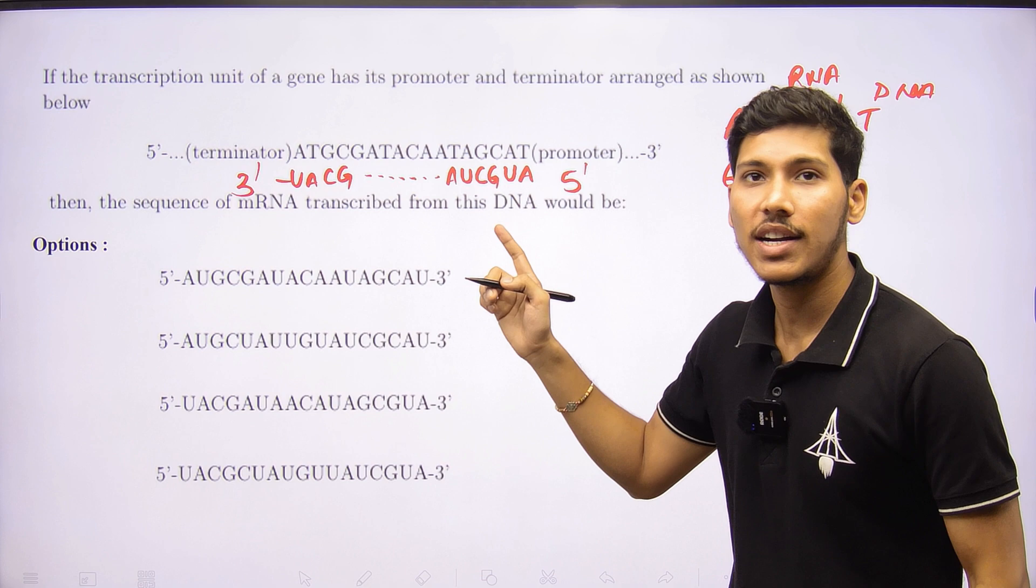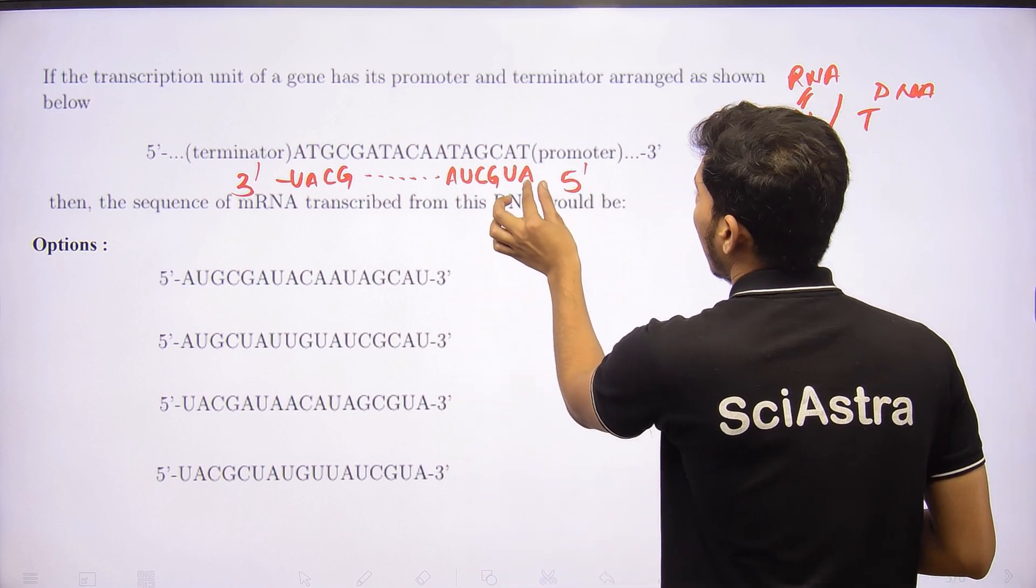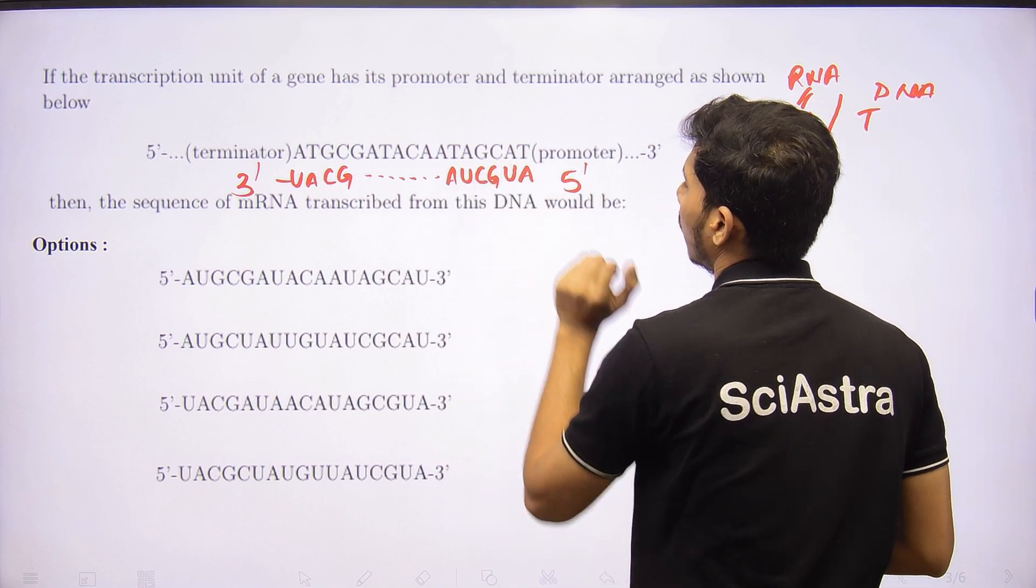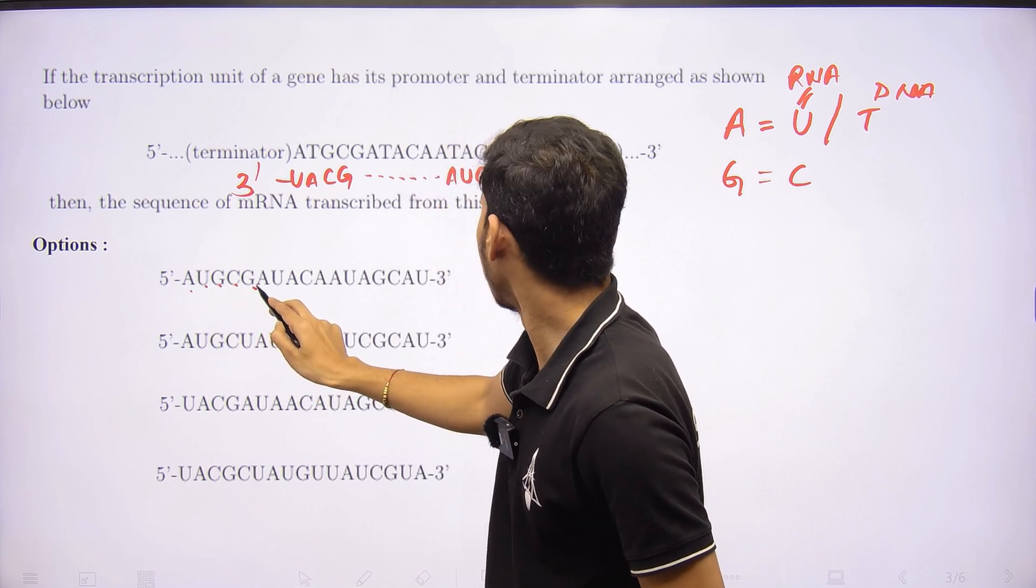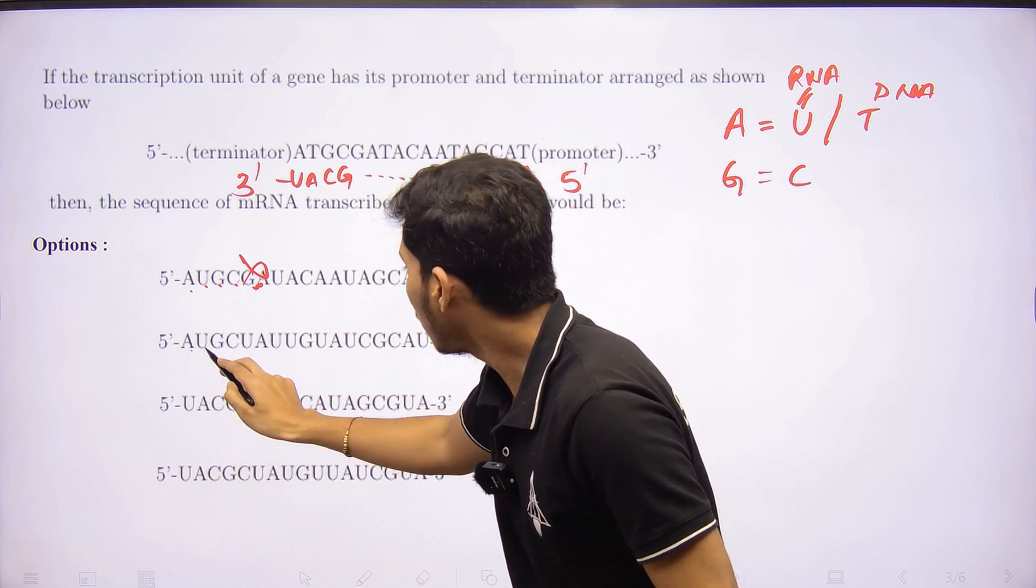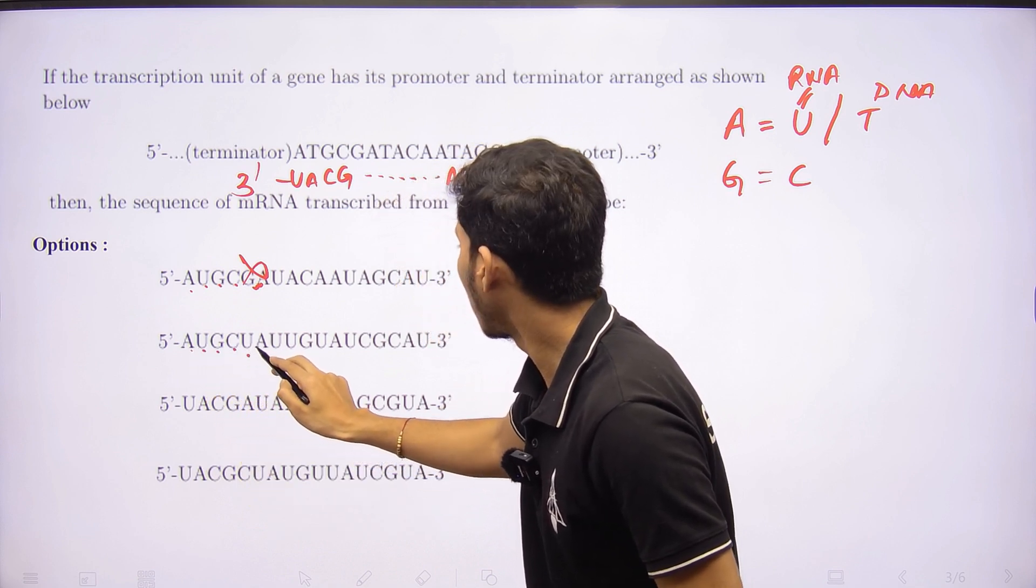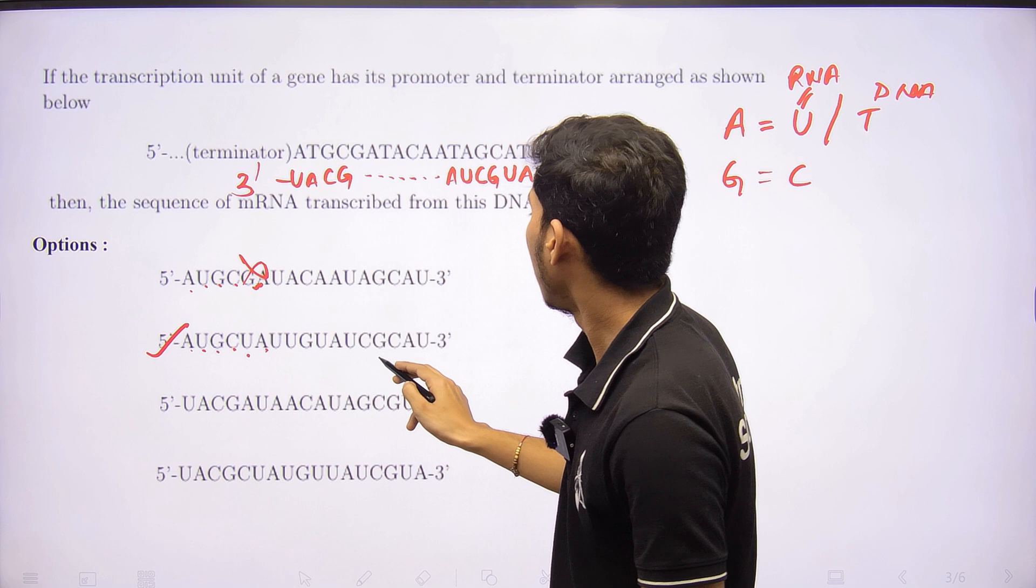Now let's see: 5' AUGCAUAUGCG - so this is incorrect. AUGCUA - this can be correct. Let's see the other strand also: UACGUACG. So this should be the correct answer.